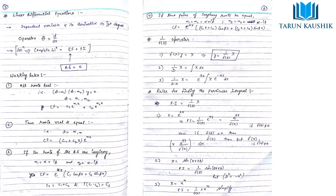For the particular integration, 1/f(D) means: if f(D)·y = X, then y = (1/f(D))·X. Here 1/D means integration (the reverse of differentiation) and D means differentiation. Whenever we get (D − a)·X, we use the formula: e^(ax) times the integral of X, where X can be any function — exponential, trigonometric, or algebraic.